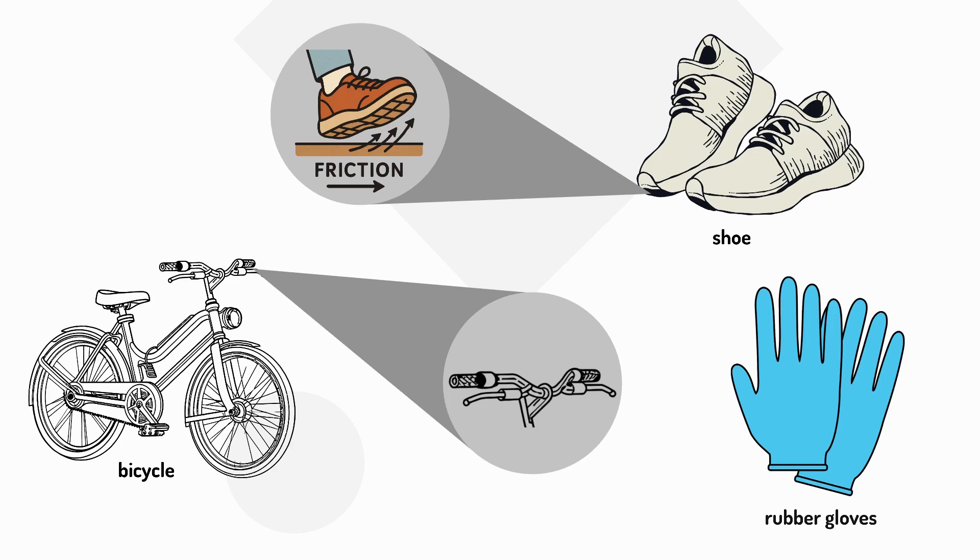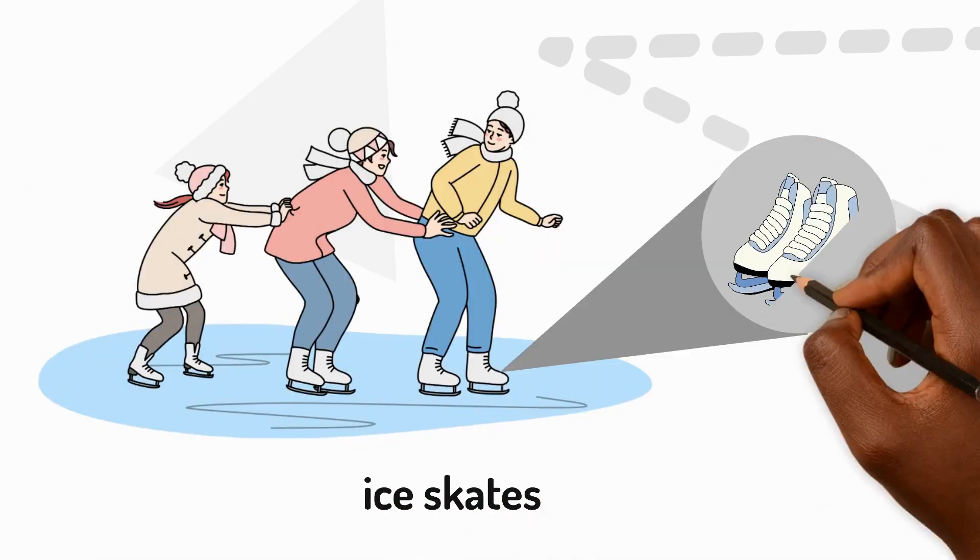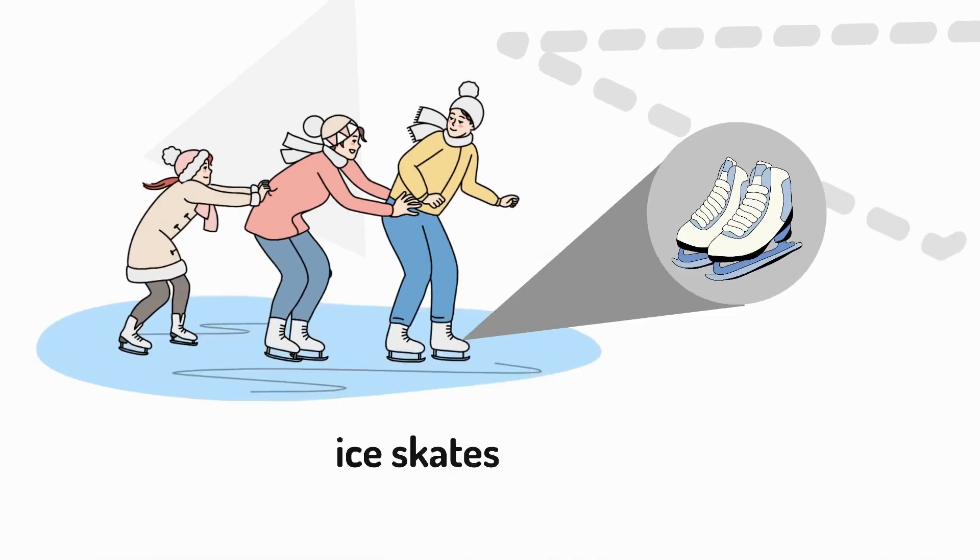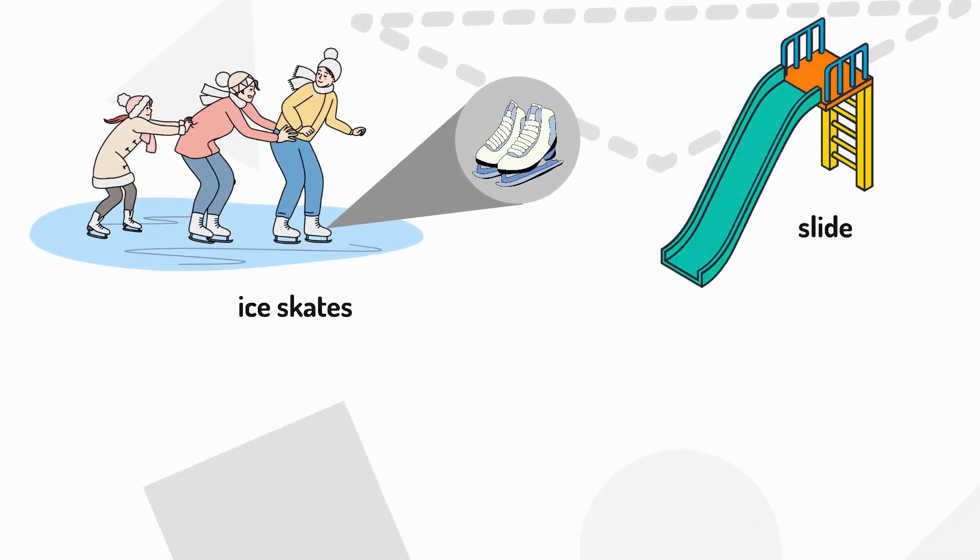But sometimes we want less friction. That's why we put oil on bike chains so they move smoothly. Ice skates glide because there's little friction between the metal blade and the ice. And slides at the playground are smooth so you can zoom down quickly.